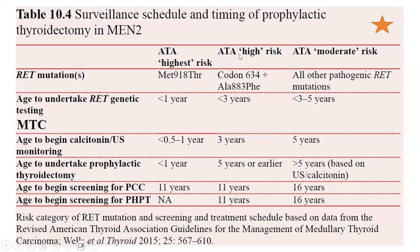For ATA high risk — codon 634 plus ALA883PHE — RET genetic testing should be done at less than three years, calcitonin and ultrasound monitoring begins at three years, prophylactic thyroidectomy at five years or earlier, and screening for phaeochromocytoma and primary hyperparathyroidism begins at 11 years. For ATA moderate risk — all other pathogenic RET mutations — genetic testing at less than three to five years, calcitonin monitoring at five years, prophylactic thyroidectomy at greater than five years based on ultrasound and calcitonin, and screening for phaeochromocytoma and primary hyperparathyroidism begins at 16 years.